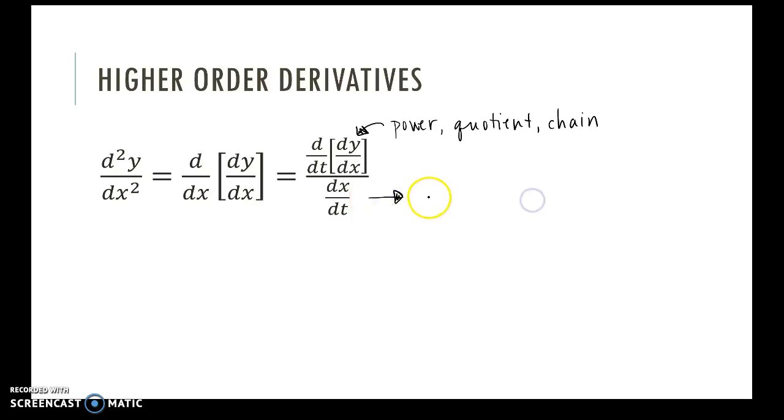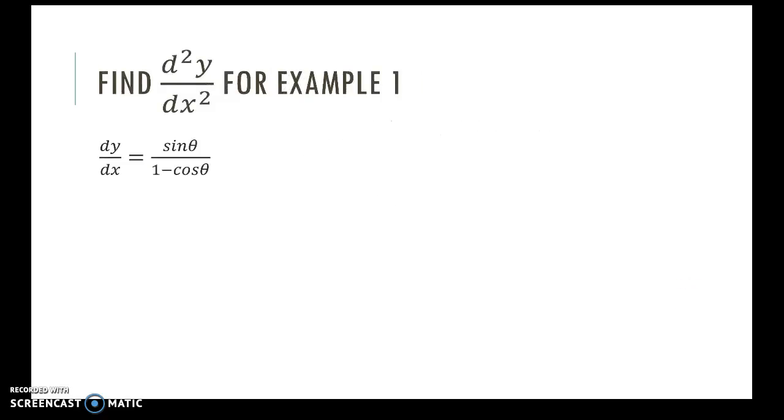Okay, so let's look at an example of that. All right, so from the first example, this is what we found our first derivative to be. So now to find the second derivative, our parameter here is theta. So we're going to find the derivative with respect to theta of this. This derivative uses the quotient rule.